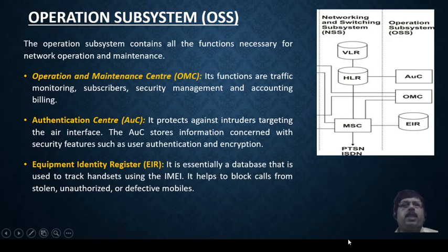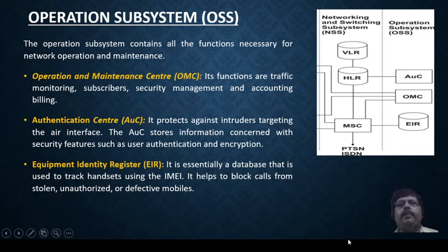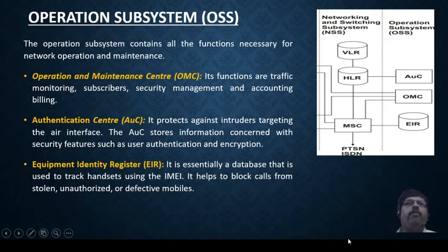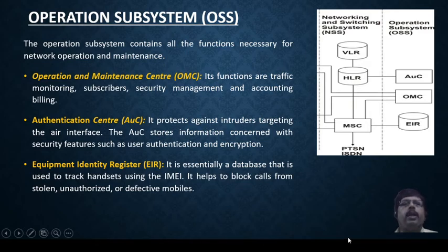Now let us discuss the last part of the GSM architecture: the Operation Subsystem. This contains facilities related to network operations and maintenance. It has three parts. The first is the Operation and Maintenance Center, or OMC. Its main functions are monitoring traffic, managing different subscribers, security management, and accounting and billing.